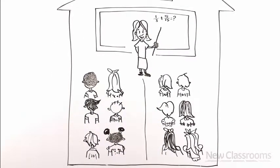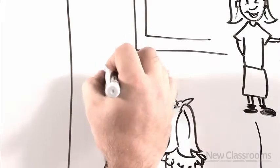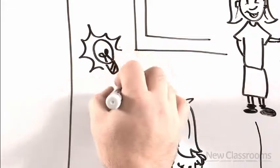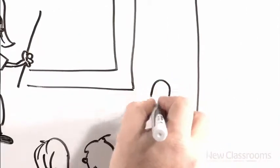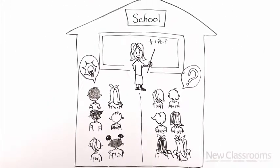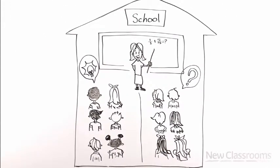So what should happen the next day? The teacher can reteach the lesson, leaving those who got it bored, restless, or disruptive. Or the teacher can teach a new lesson, letting the kids who didn't get it fall further and further behind, until they are discouraged or frustrated.